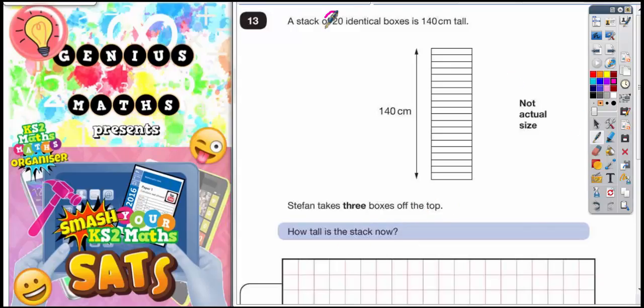Well, we've got 20 boxes and the total of the stack is 140cm tall. So what we've got to do is 140 divided by 20.